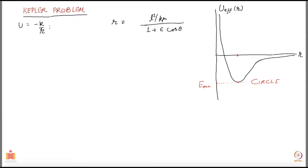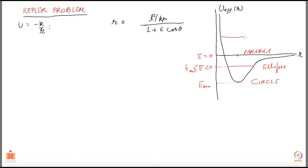If you are anywhere between this point and that point in energy, you get an ellipse. If your E equals zero, you get a parabola — the particle comes in and then returns, going towards infinity and never coming back. And if your energy is higher than zero, anywhere above that, that is also an open orbit — the particle goes to infinity and it is a hyperbola.